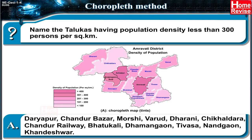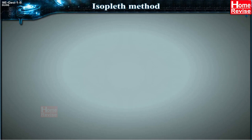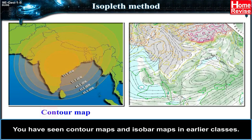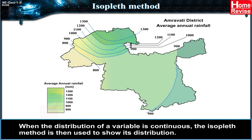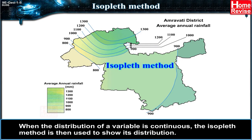Isopleth method: you have seen contour maps and isobar maps in earlier classes, where distribution was shown with the help of lines connecting equal values. When the distribution of a variable is continuous, the isopleth method is used to show its distribution — for example, altitude, temperature, and rainfall.